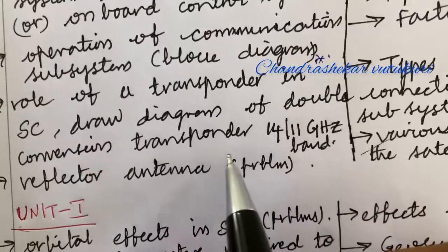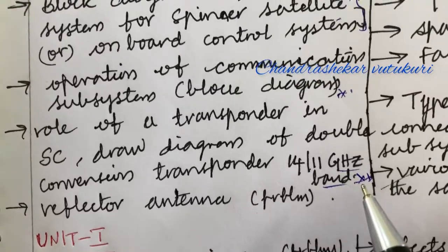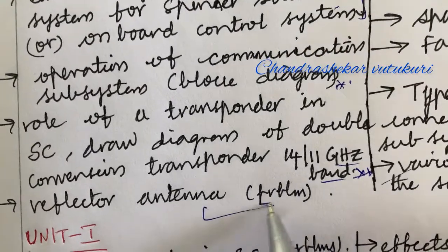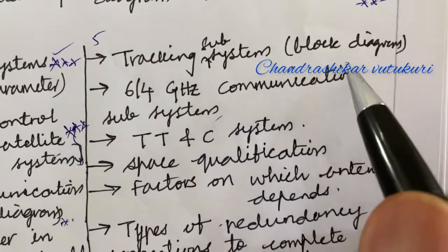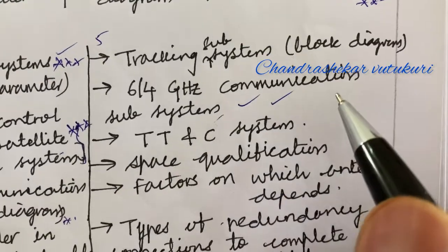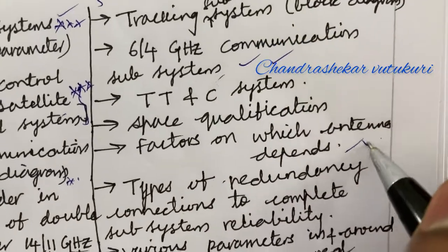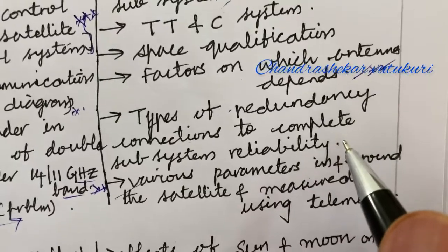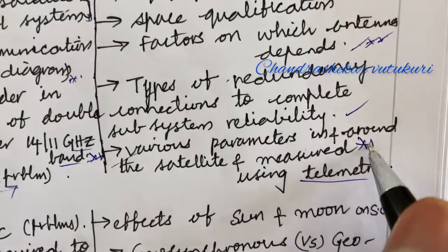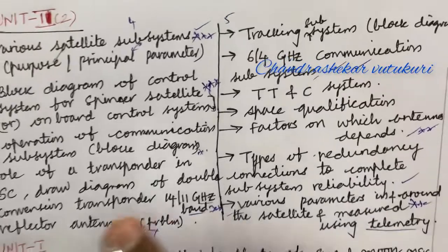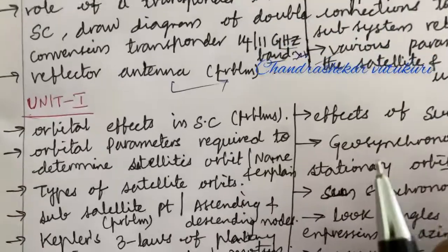Operation of the communication subsystem along with the block diagram, and the role of the transponder in the spacecraft — draw a diagram of a double-conversion transponder for the 14/11 GHz band — is set to be the topmost and most likely question for 10 marks. Reflector antenna and related problems, and defining terms, may be short questions. Tracking subsystem with block diagram and the 6/4 GHz communication subsystem are also top questions. TT&C subsystem as well as space qualification factors on which the antenna depends, types of redundancy connections to complete subsystem reliability, and various parameters measured using telemetry are set as top questions which may occur in 5a, 5b, as short as well as long questions from Unit 2.